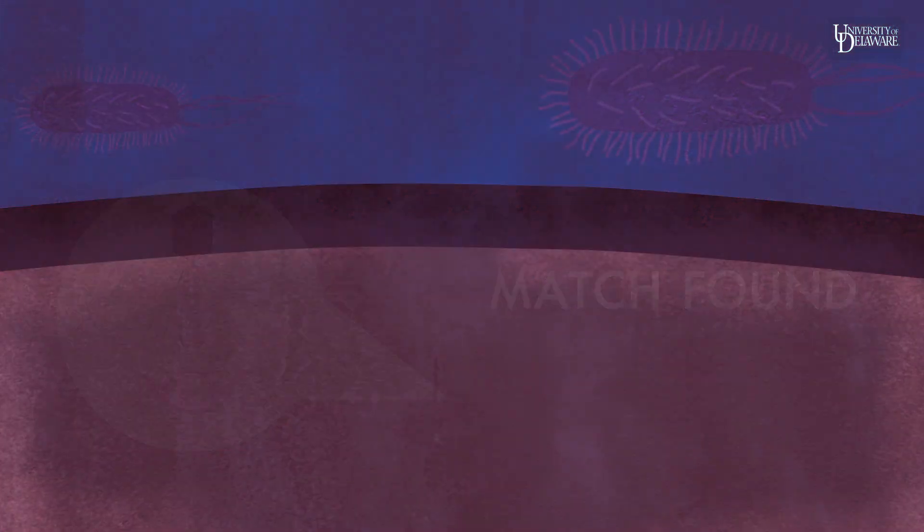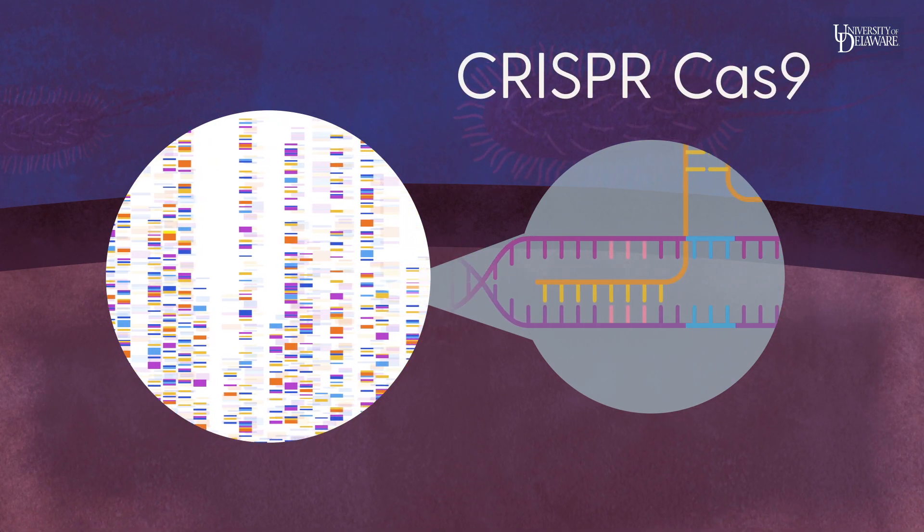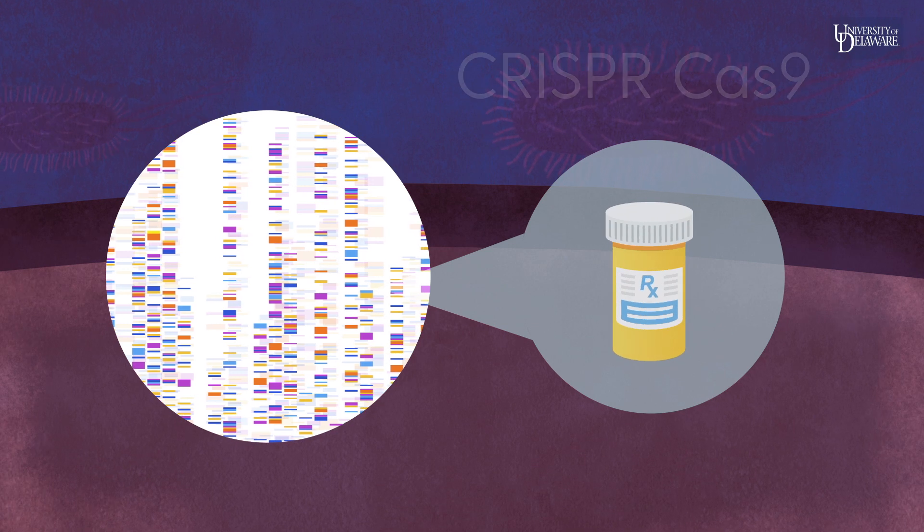Scientists now are using this innate system to target specific genes in a process called CRISPR-Cas9. It's used in precision medicine and other emerging therapies.